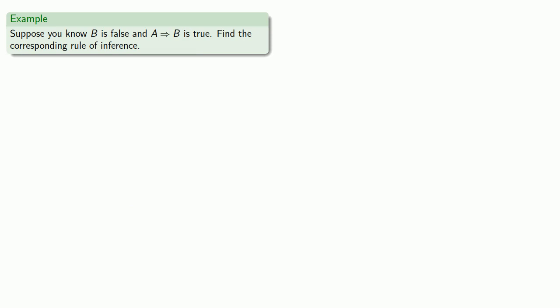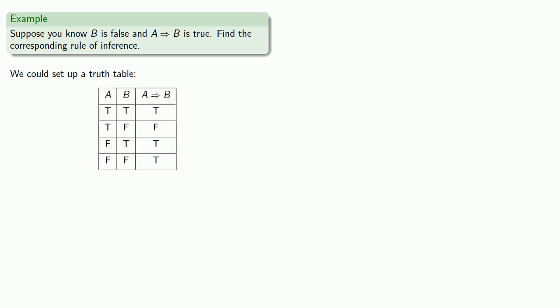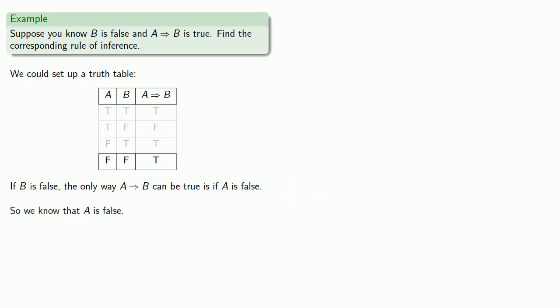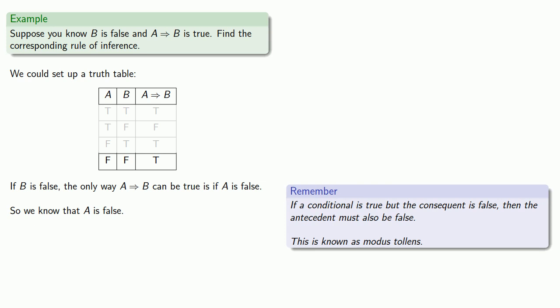One more important rule of inference: suppose we know that B is false and that if A then B is true. Setting up the truth table, we know that B is false and the conditional if A then B is true — so we have to be in one specific line. If B is false, the only way for the conditional to be true is if A is false. So we know that A is false. This leads to another important rule of inference: if a conditional is true but the consequent is false, then the antecedent must also be false. The Latin name for this is modus tollens.